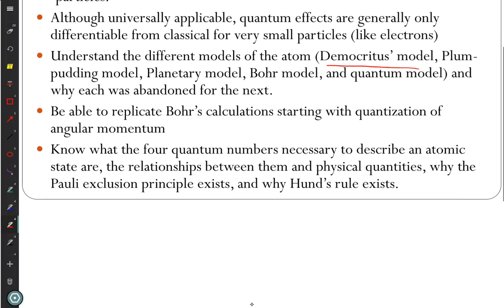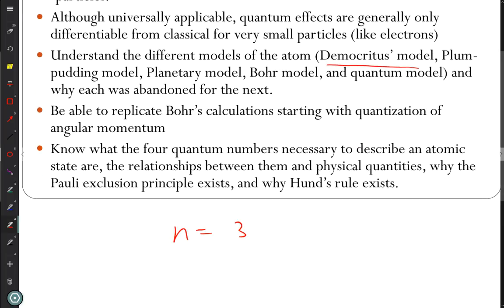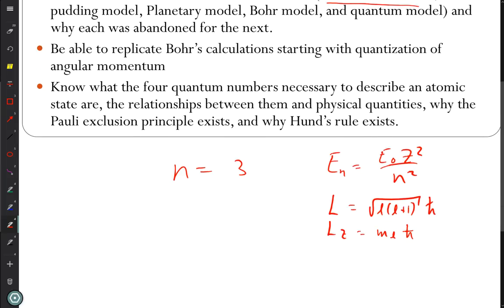And of course, the relationships like if n equals three, what values can l have? Zero, one, or two, right? You need to have that in your head. You're not going to have the conditions like that on the test. You will have equations like E sub n is equal to E0 z squared over n squared, right? You'll have equations like that. You need to know how to use them. The E0 is minus 13.6 electron volts. And things like angular momentum is, you'll have equations like that. But you have to know how to find l and then how to find m sub l.